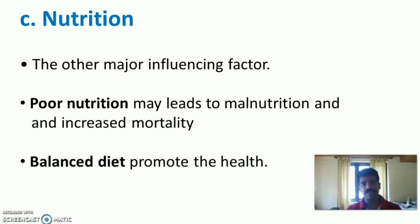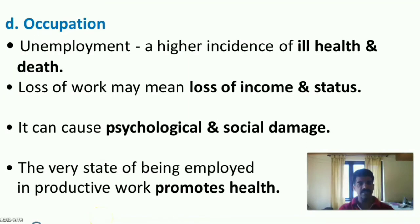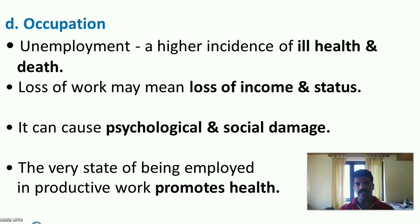Nutrition is another major influencing factor of our health. Poor nutrition may lead to malnutrition and increased mortality, while balanced nutrition promotes the health of an individual. Occupation is the next factor: unemployment leads to a higher incidence of ill health and death. Loss of work may mean loss of income and social status, causing psychological and social damages. Being employed in productive work promotes health.